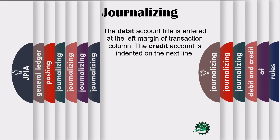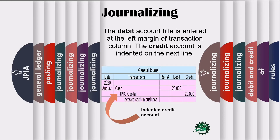The debit account title is entered at the left margin of the transaction column. The credit account is indented on the next line. Another thing — debit and credit account titles must not be interchanged. You cannot write the credit account title on the first row then the debit comes next. It is always the debit account title first to be written in the first row of the general journal. The same goes with its corresponding amount. This will also apply to the preceding transactions.